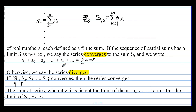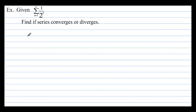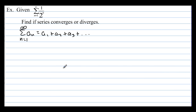The terms can be converging to a value, but that doesn't mean the sum is converging. The sum of a series, when it exists, is not the limit of the individual terms, but the limit of those terms added up. For example, given the sum from n equals 1 to infinity of 1 over 2^n, let's find if the series converges or diverges by looking at the partial sums.